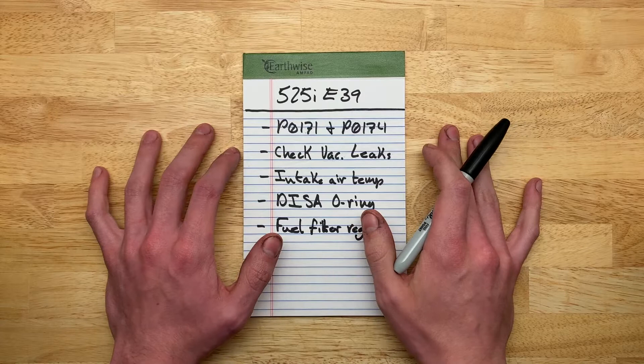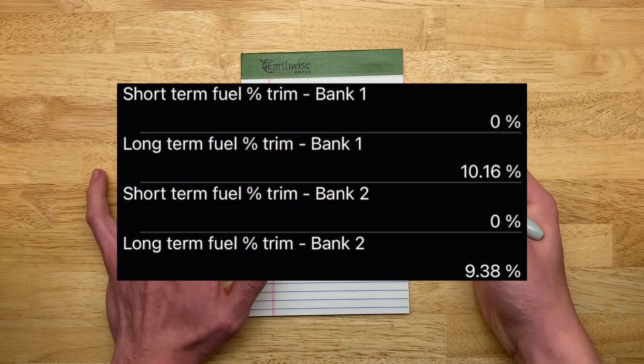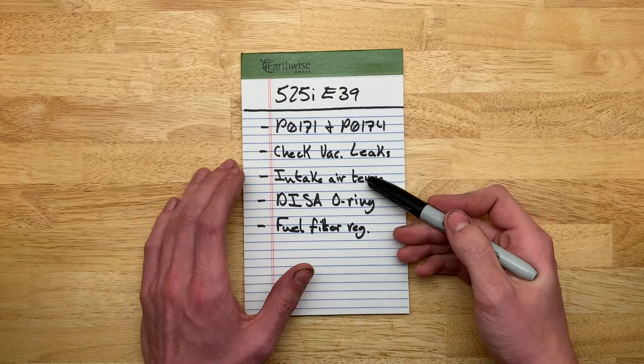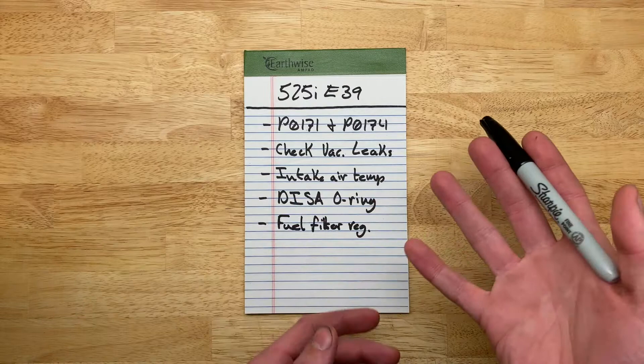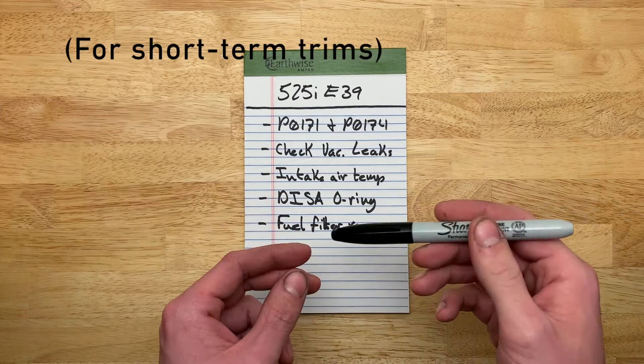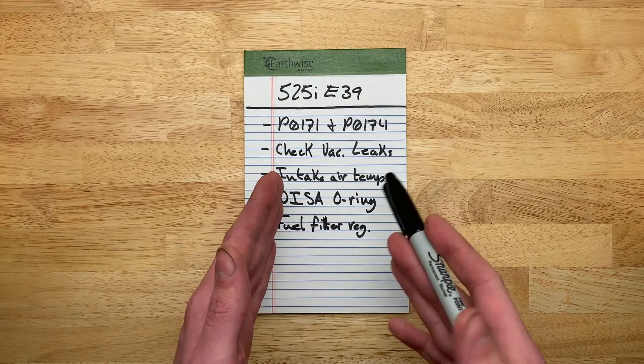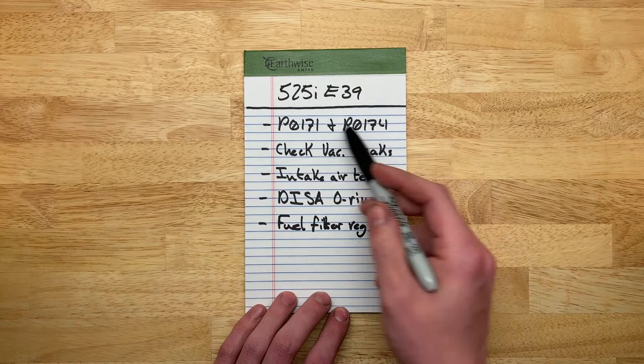With these codes, I looked at the fuel trims and I was at a positive 10%. That is quite high. Anything plus or minus 2% or so is considered normal or acceptable. 10% to me is quite unacceptable. The DME — the German acronym for an ECU — if it detects a 20% fuel trim positive or negative for more than a few seconds, it will throw an engine code for both banks. In this case, I got both.